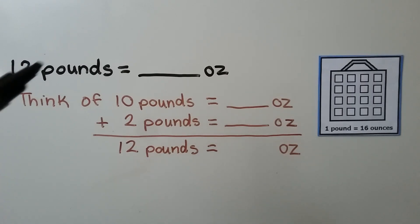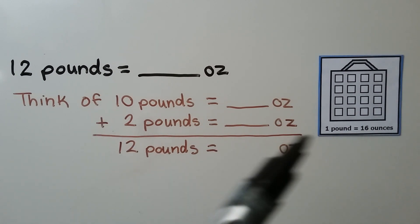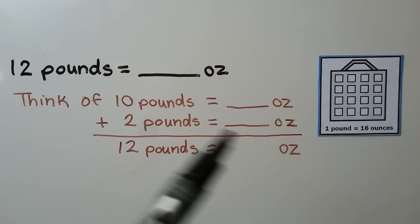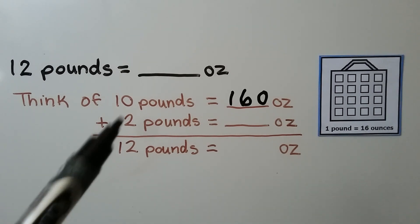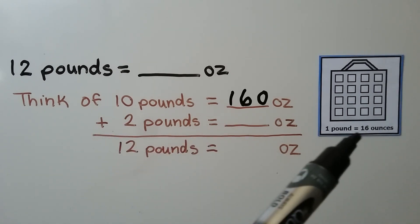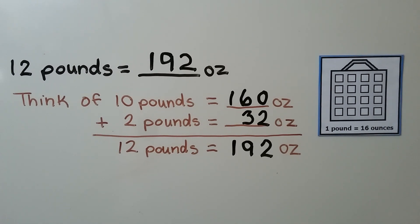Twelve pounds is how many ounces? We can break it into ten pounds plus two pounds. Ten pounds is one hundred sixty ounces, and two pounds is two times sixteen, which is thirty-two ounces. Adding one hundred sixty and thirty-two together, we get one hundred ninety-two ounces.